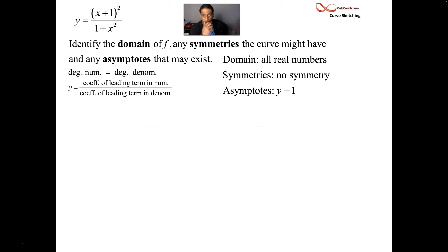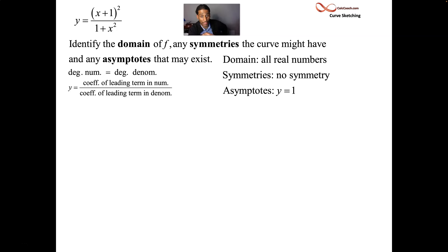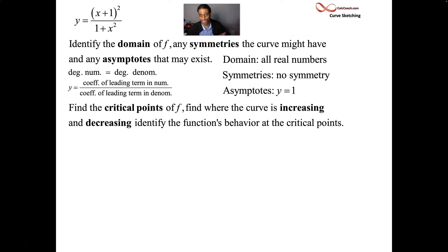There's no symmetry. The function is neither even nor odd. When you square out the numerator, you'll have a mixture of even and odd terms. The denominator is even, but the numerator is neither. You can't have a slant and a horizontal asymptote together — it's either one or the other — so we have a horizontal. No need to think about a slant.